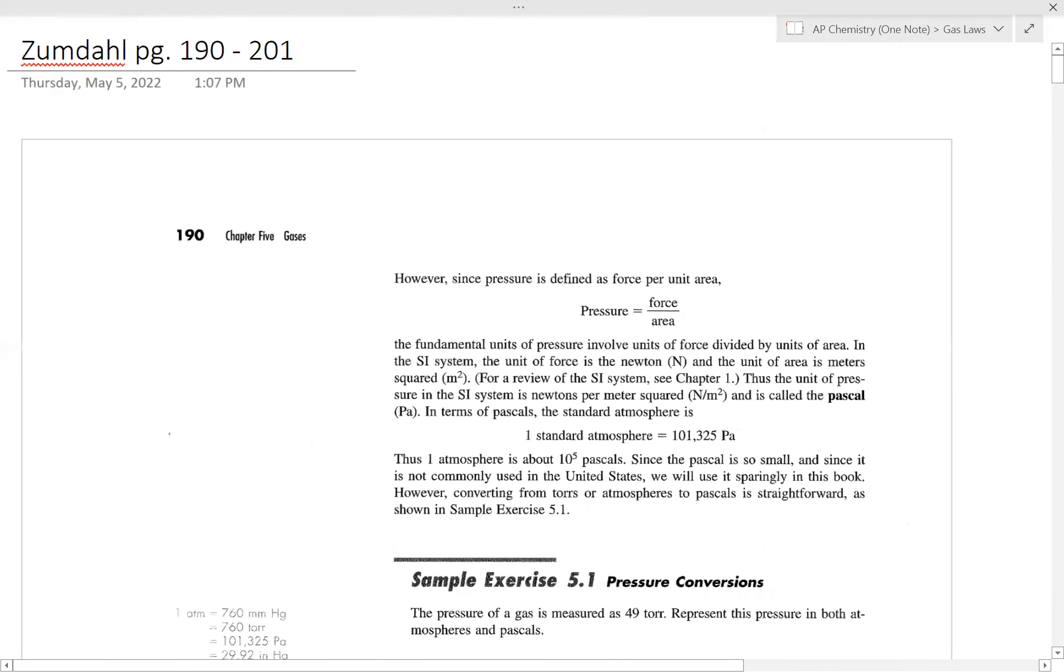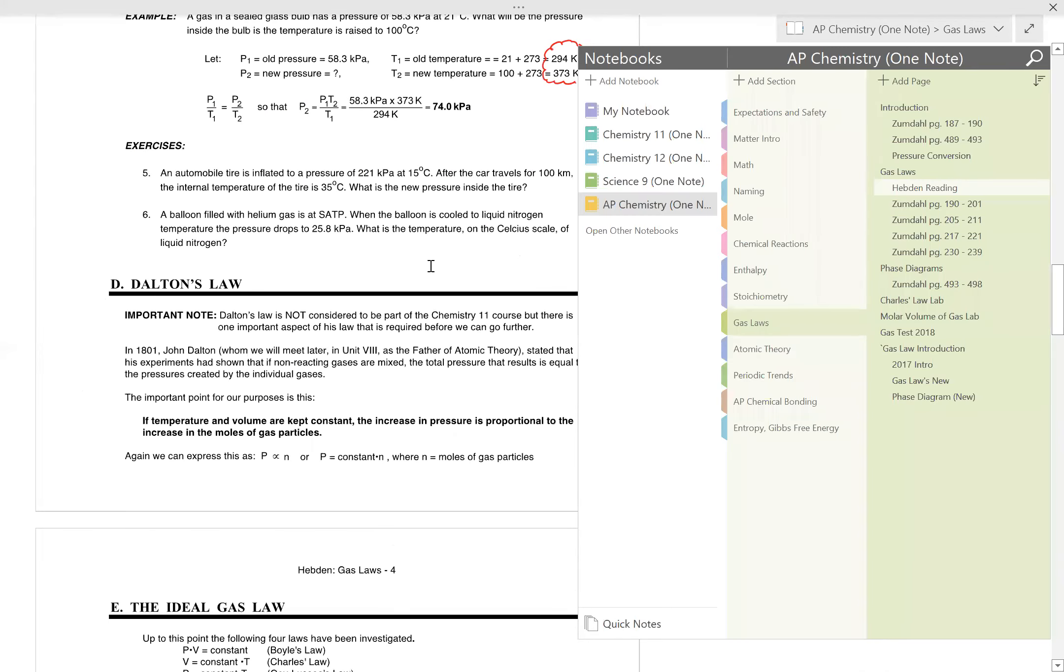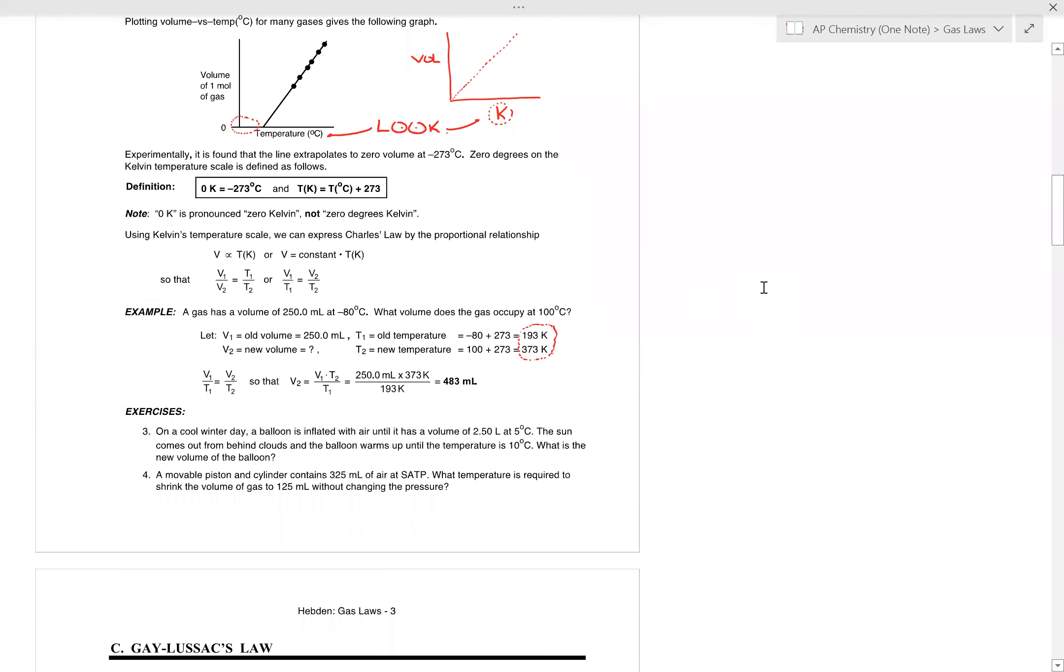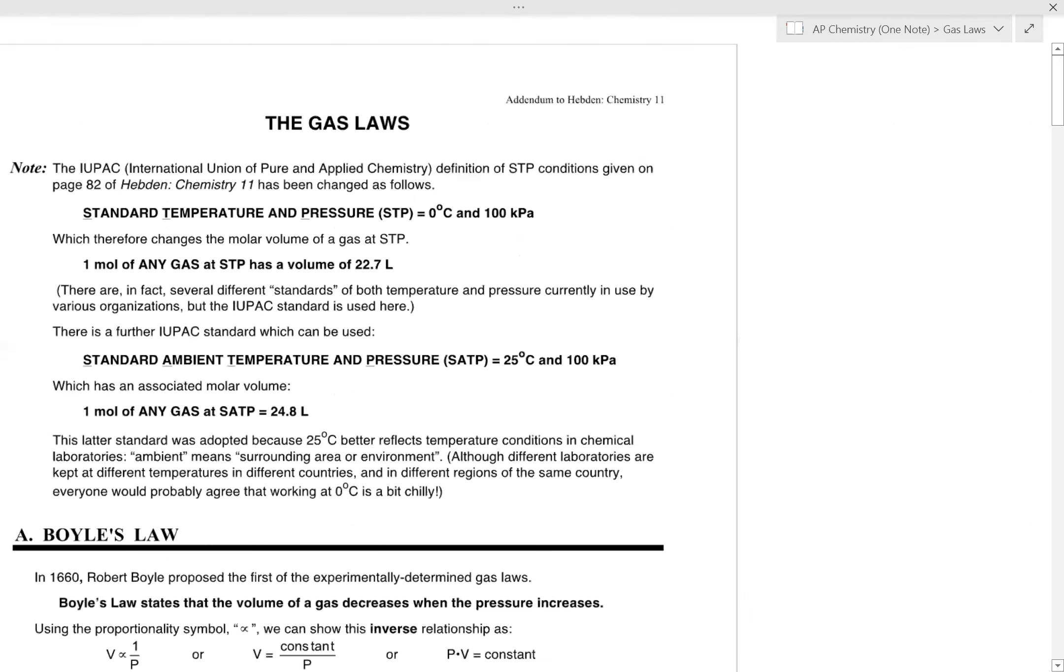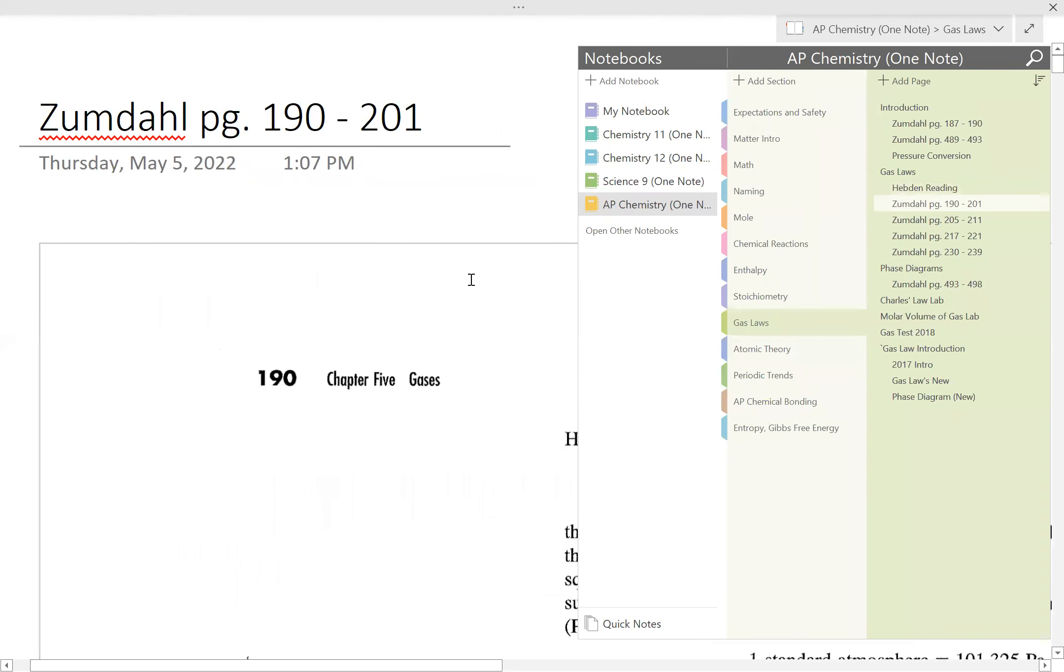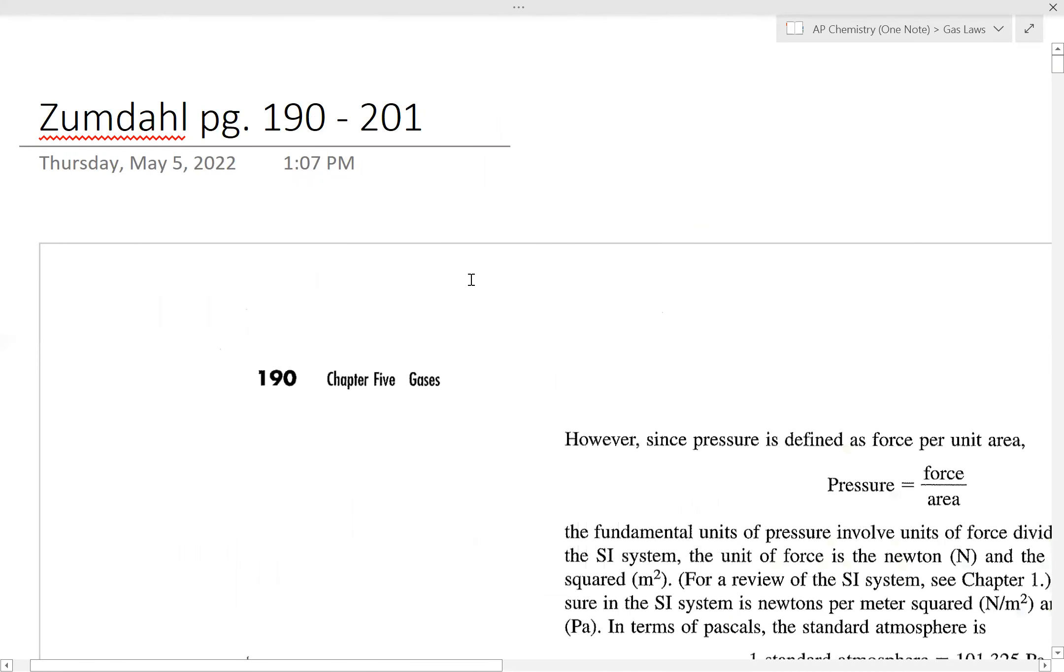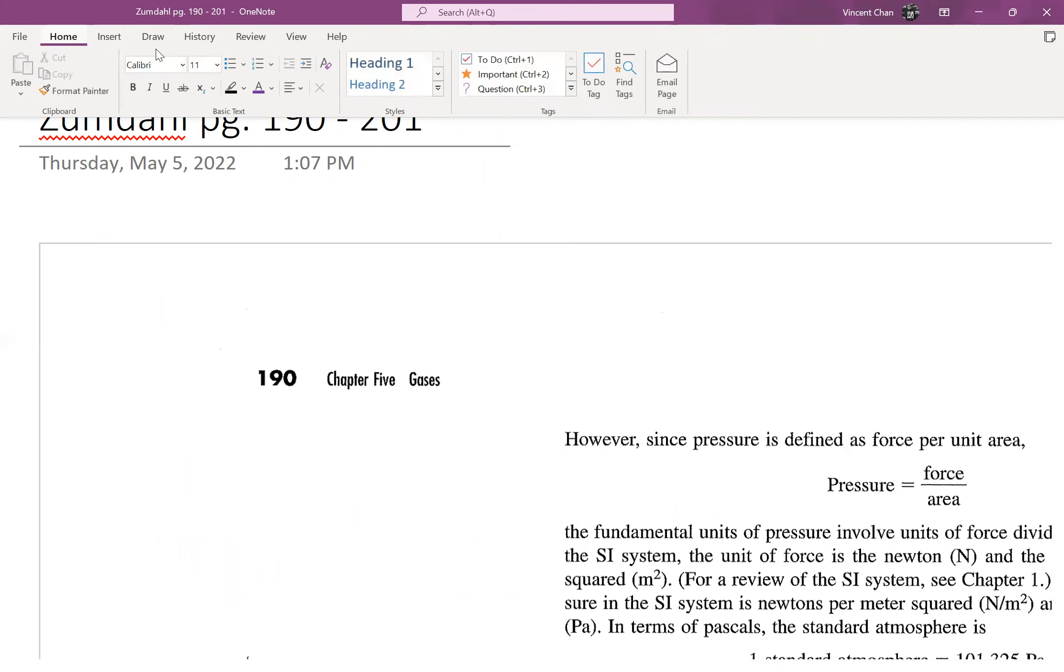So my recommendation is this: When you're going through this unit on the introduction to gas laws, you should have Zumdahl pages 190 to 201 open as a reference, as well as the Hebden reading. In terms of which one is better, I would say the gas law section of the Hebden reading is a good basic introduction. But for deeper understanding, I would recommend focusing more on the Zumdahl text, which gives you more background material than the Hebden does.